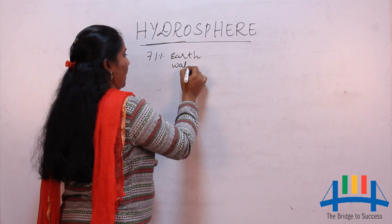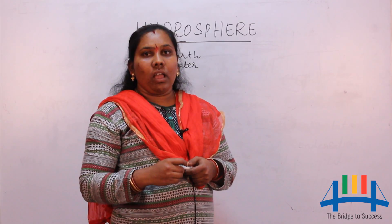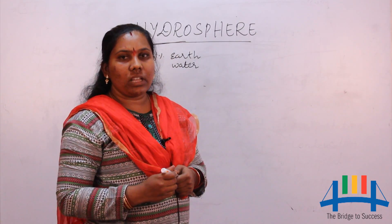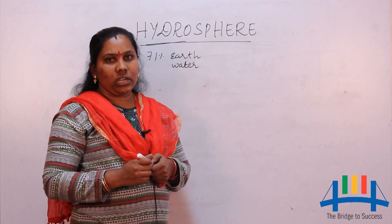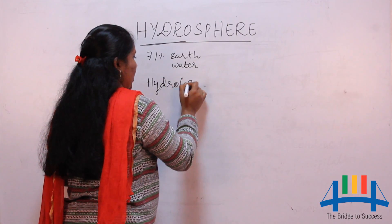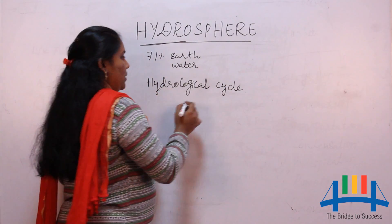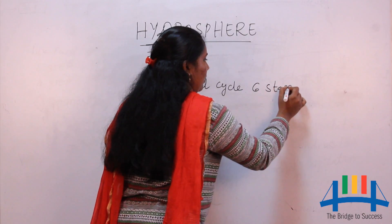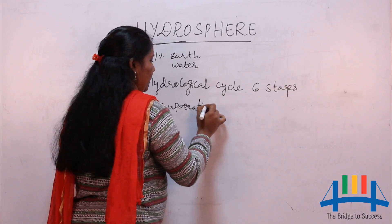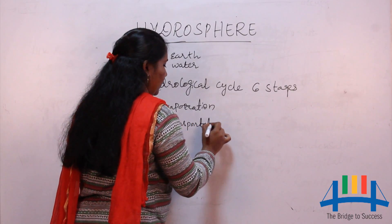Without water, life cannot exist on Earth. Nearly 71% of the Earth is covered by water. Water is a recyclable, renewable resource because of the water cycle. That is why our life exists on Earth. This cycle has been occurring for billions of years. Let us see what this water cycle, or hydrological cycle, is.